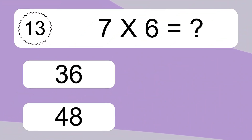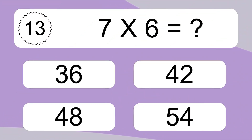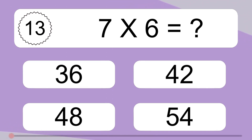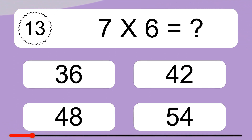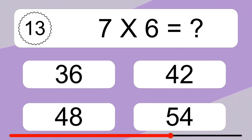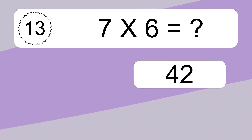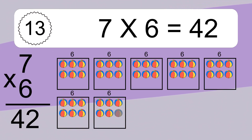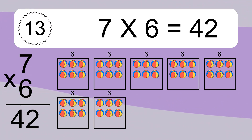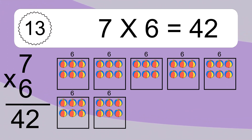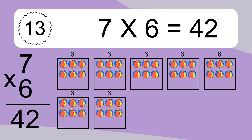7 times 6 equals what? 7 times 6 equals 42. We have 7 boxes and each box has 6 colorful balls inside. If you count all the balls in all the boxes together, you will have 7 times 6 balls. This equals 42 balls.